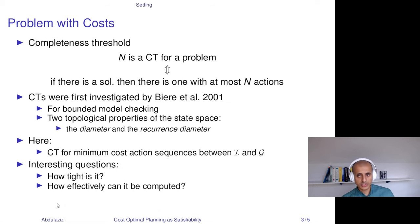The second thing I would like to introduce is the concept of a completeness threshold, or CT for short. In general, for a problem whose solution is a transition sequence, a number N is a CT if and only if the following holds: if there is a solution to the problem, then there is one with at most N transitions or N actions. CTs were first investigated by Amin Biere in 2001 for bounded model checking, and in that work he studied two topological properties of the state space as CTs: the diameter and the recurrence diameter.